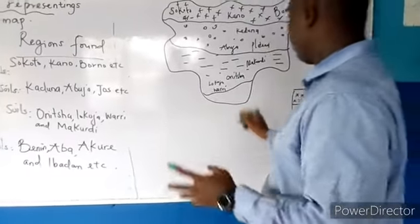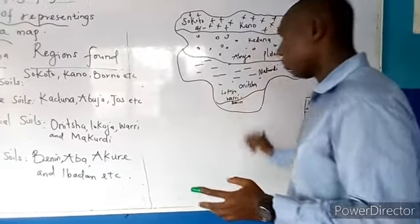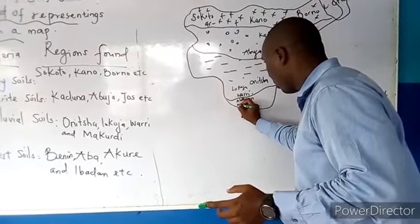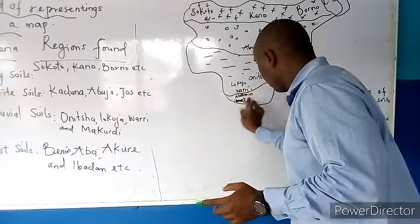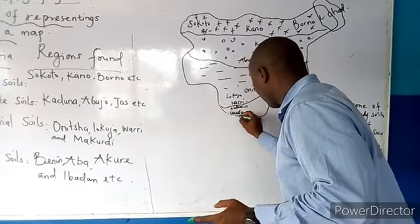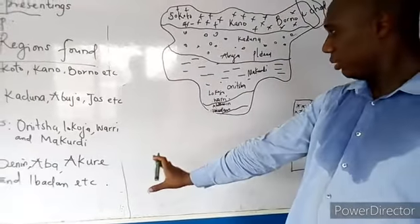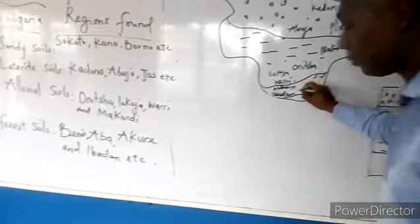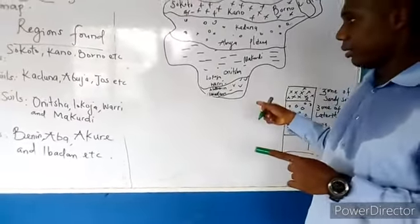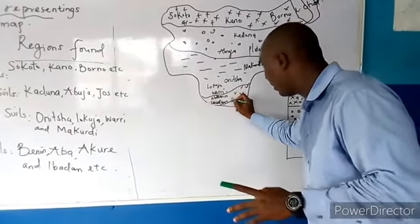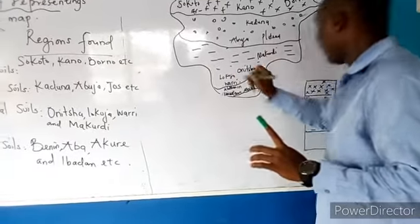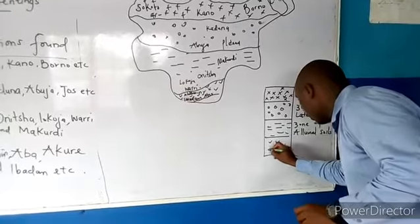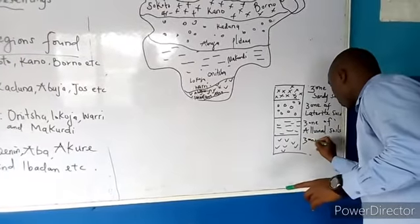The last one we have is around the south — zone of forest soil. Akure is around these parts. Ibadan is close to Akure. Abba is in Anambra state, around this region. So other states are also included but these are the main ones. You put a sign like this and write the name of the soil: zone of forest soil.